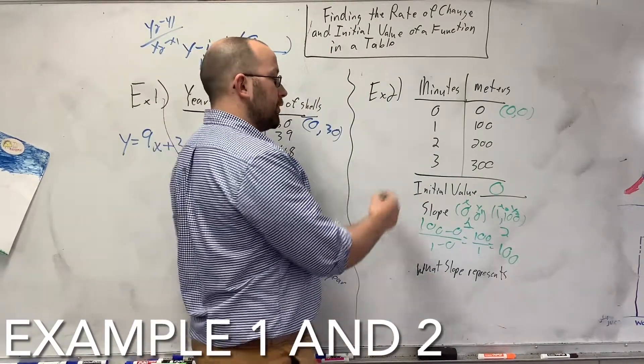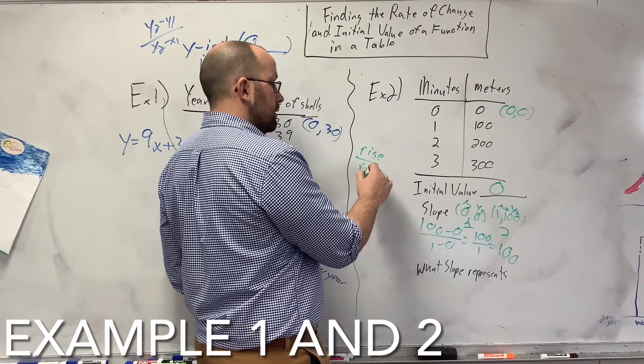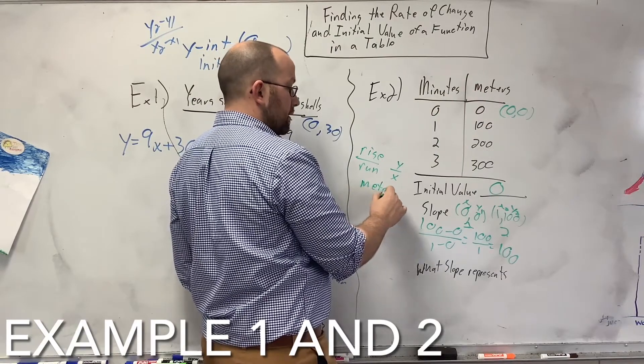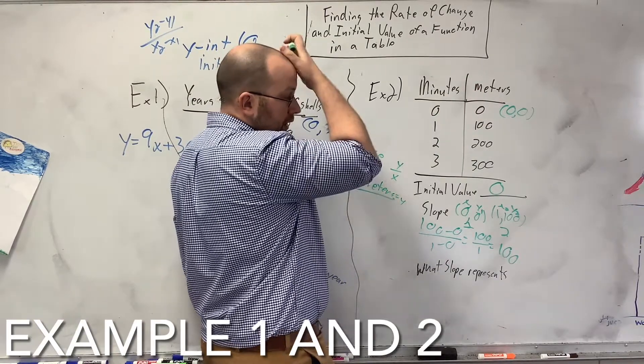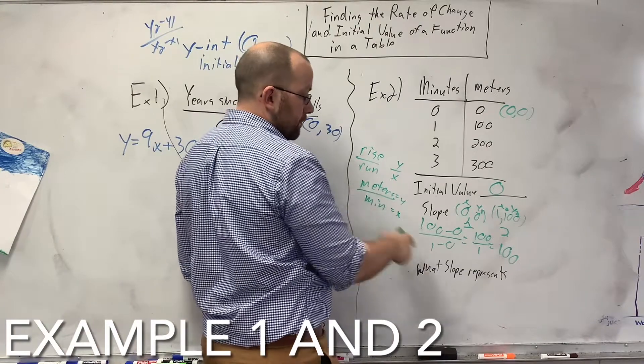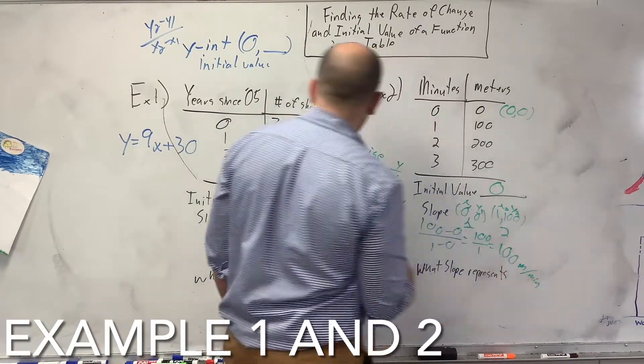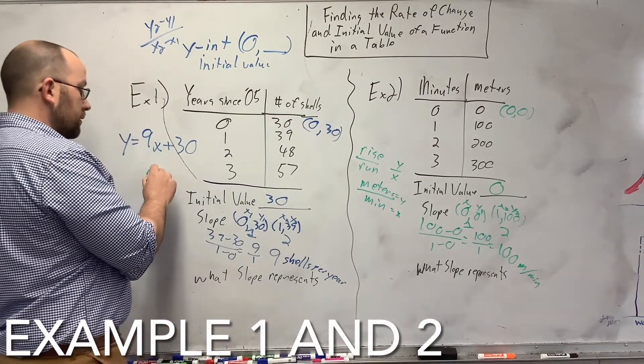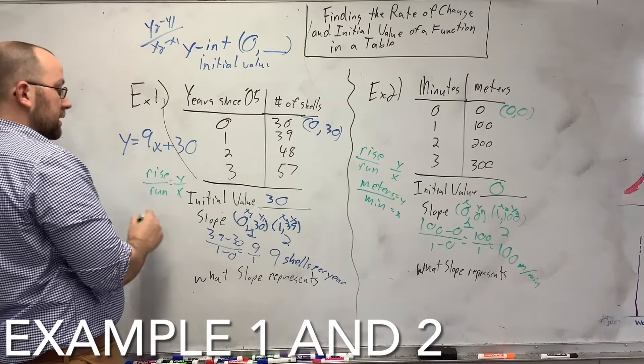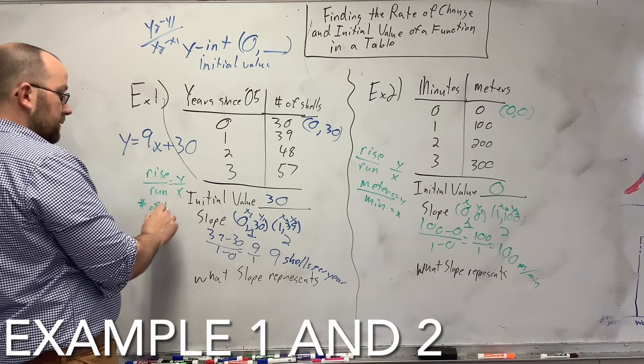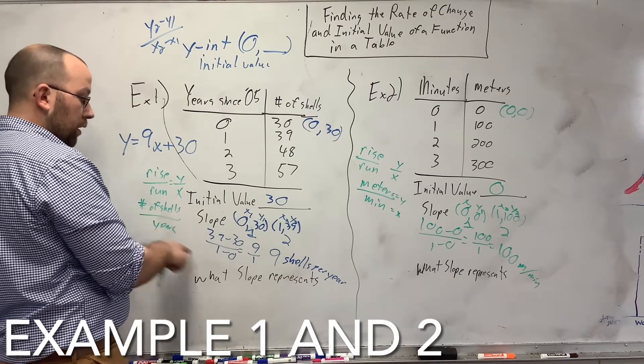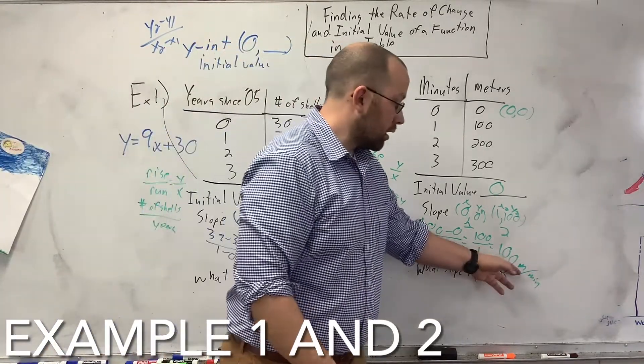Well, my slope represents, if you think about it as rise over run or y over x, it's your meters, in this case, which is my y, so my meters equals my y, over what my x equals, which is my minutes. So, it's 100 meters per minute. If you go back over here, same thing. If you do rise over run, which is how you find the slope from the graph, where you say y over x. What does my y represent here? Number of shells, and what does my run mean? Years since 05, say years. So, number of shells per year.